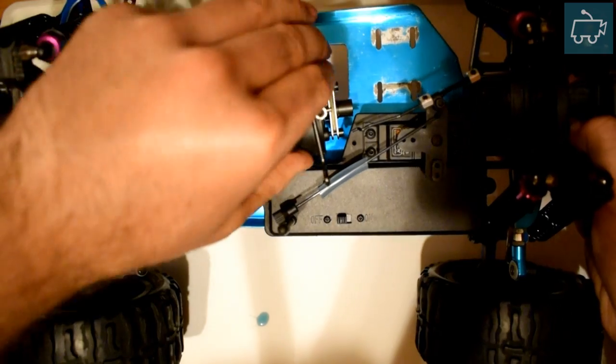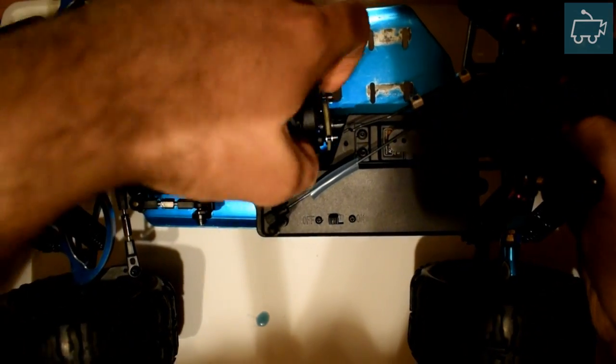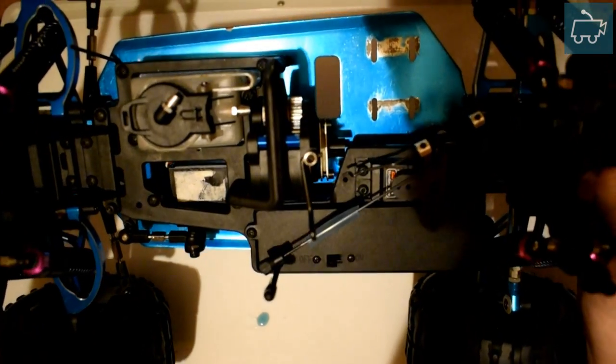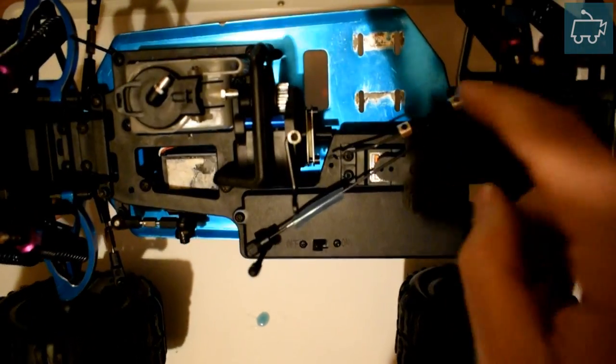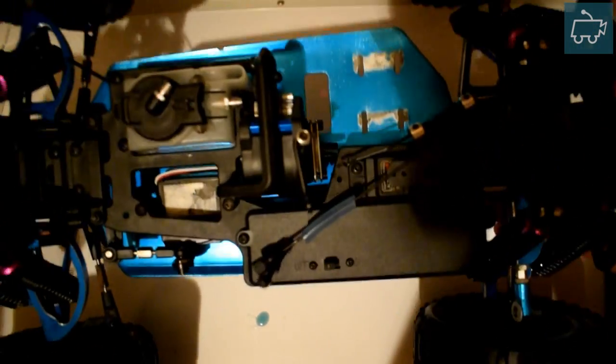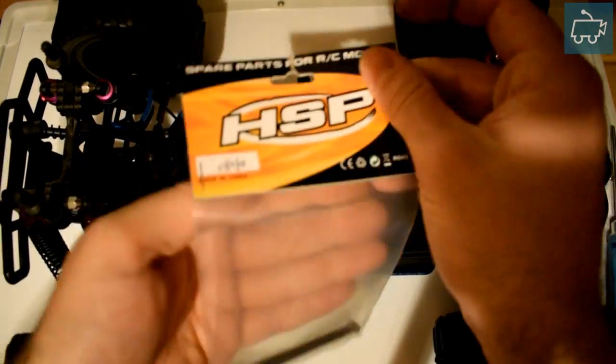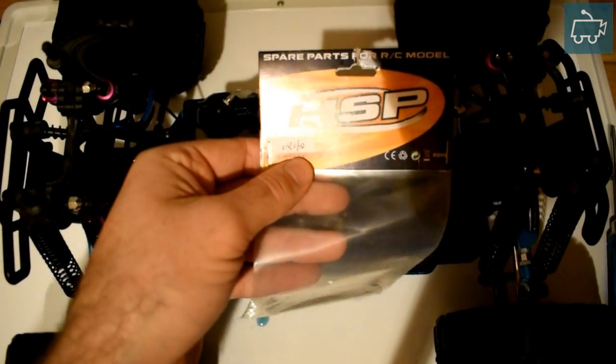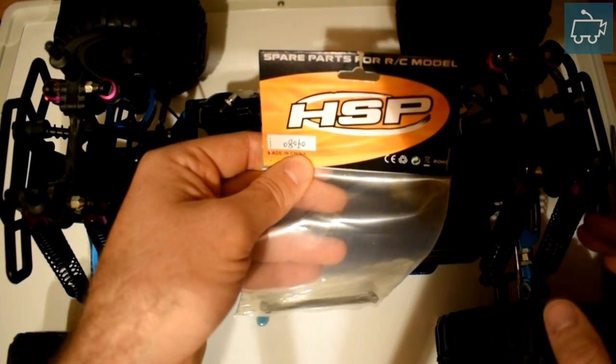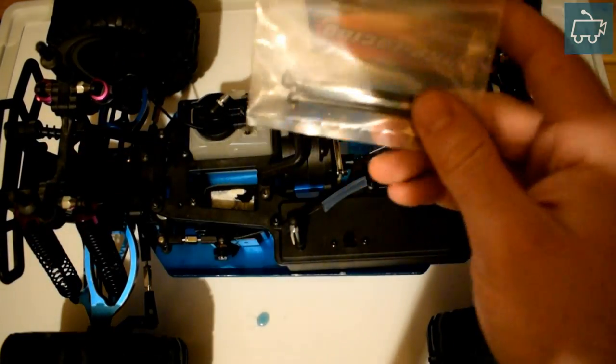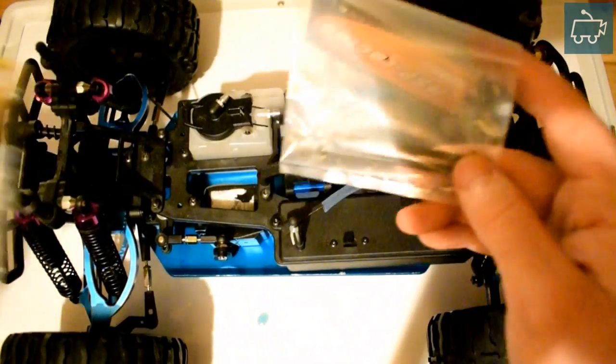So the gearbox will sit in there, that's completely secured now just by the retaining pins. What you now need to do though is of course use your two dog bones which we have got here. So this is part number, what does that say? That one is 08060, that's the shorter one. Sorry no, that's the longer one. Then you have the shorter ones, this one is 08061.